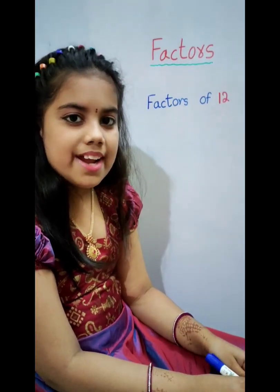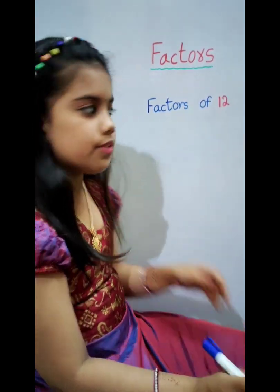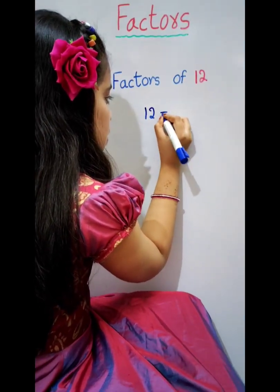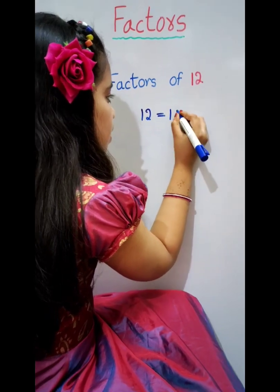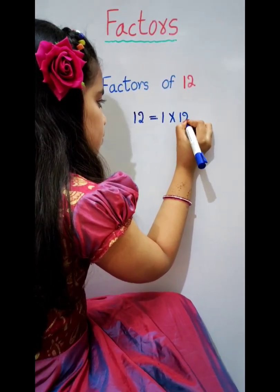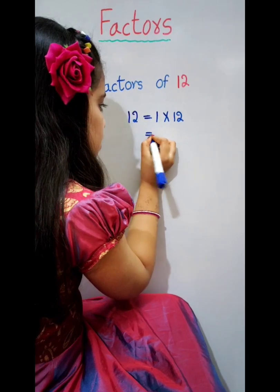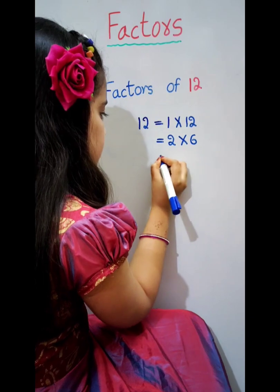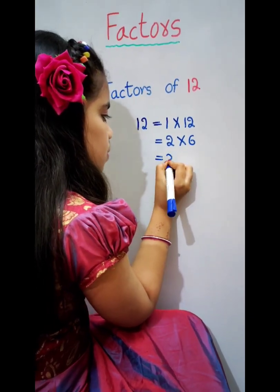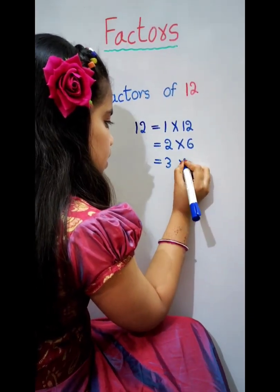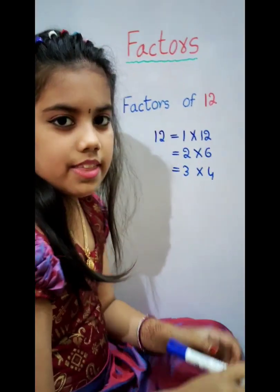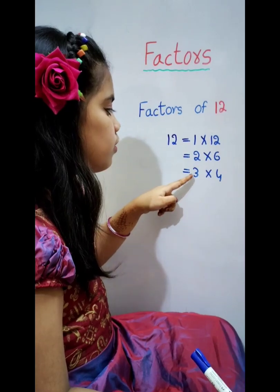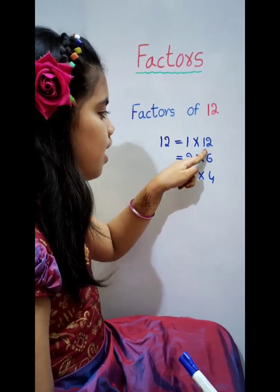For example, find the factors of 12. One times 12 equals 12. Two times 6 equals 12. Three times 4 equals 12. The factors of 12 are 1, 2, 3, 4, 6, 12.